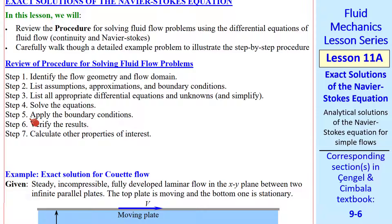First, a review of the procedure. Step one: identify the flow geometry and domain. Step two: list assumptions, approximations, and boundary conditions. Step three: list all appropriate differential equations and unknowns, and simplify. Step four: solve the equations. Step five: apply boundary conditions. Step six: verify the results. And step seven: calculate other properties of interest.